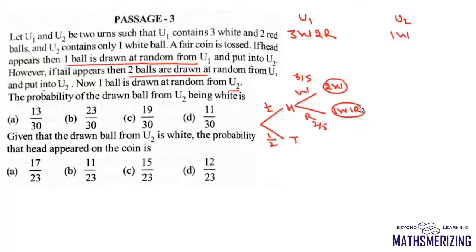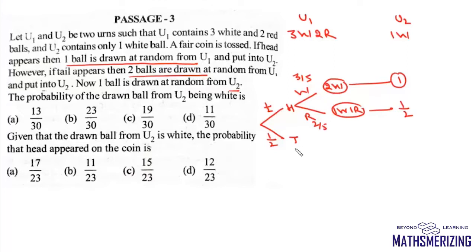1 ball is drawn from U2; we need to find the probability that the drawn ball is white. If U2 has 2 white then the probability of drawing a white ball is 1, and if it has 1 white and 1 red this probability will be 1/2.